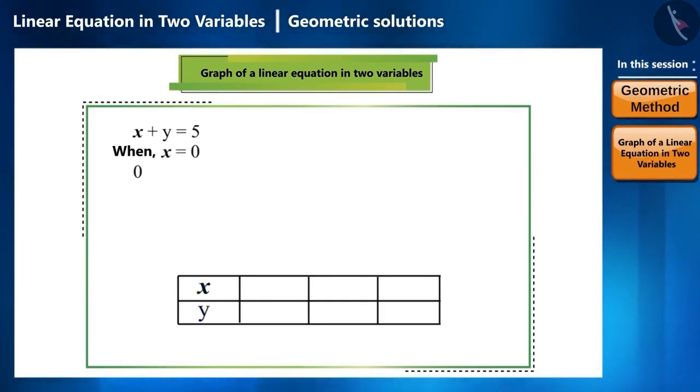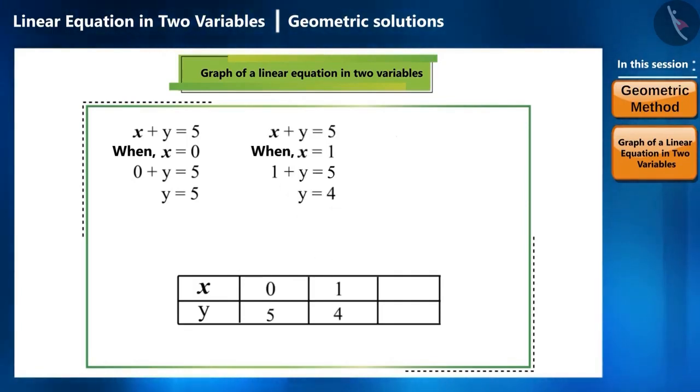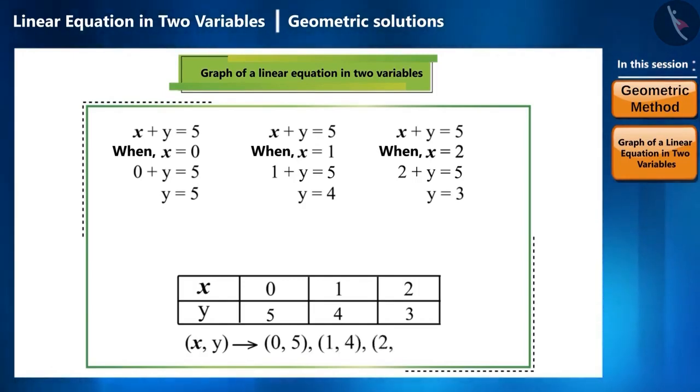By replacing x with 0, we will get y is equal to 5. By replacing x with 1, we will get y is equal to 4. By replacing x with 2, we will get y is equal to 3. And we will write them in brackets as coordinate points like this: (0, 5), (1, 4), (2, 3).